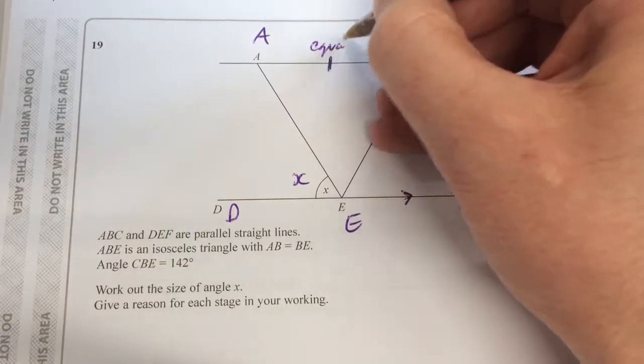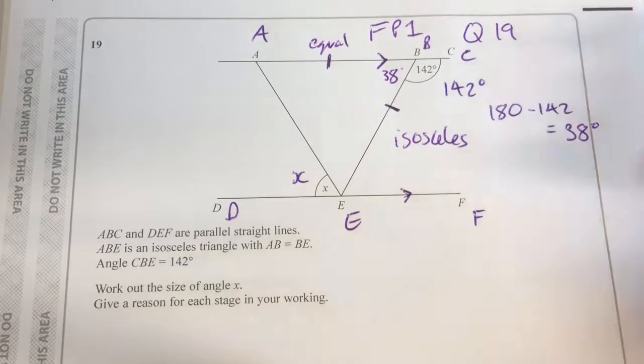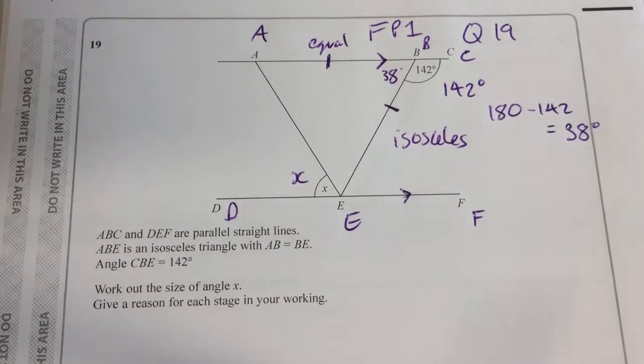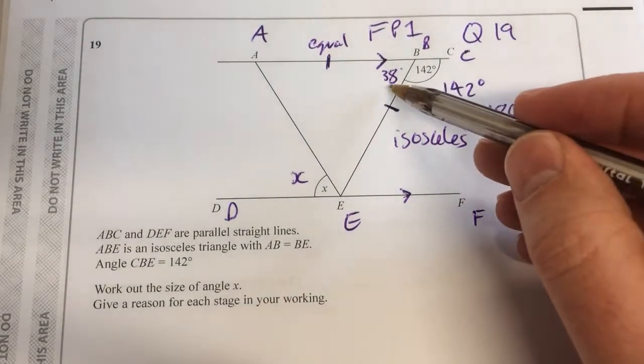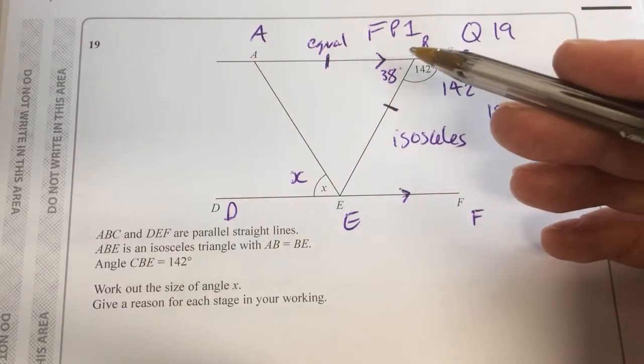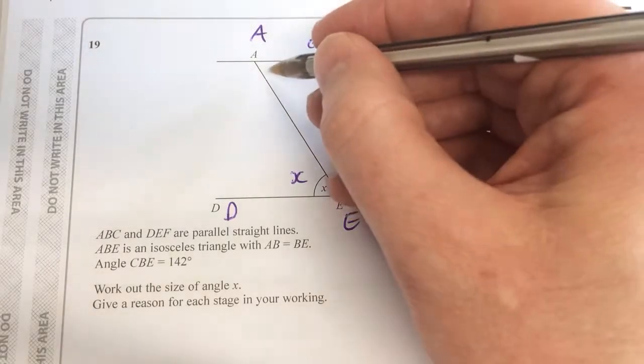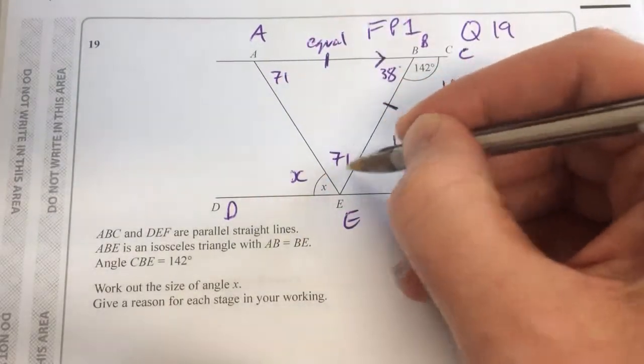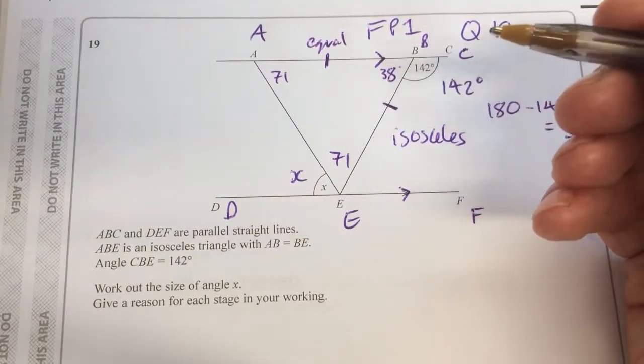So those lines mean they're equal, so it's an isosceles. So then what do I do? Do 180 take away 38, which we know is 142. Half it. And then we halve it. So that gives us 71.